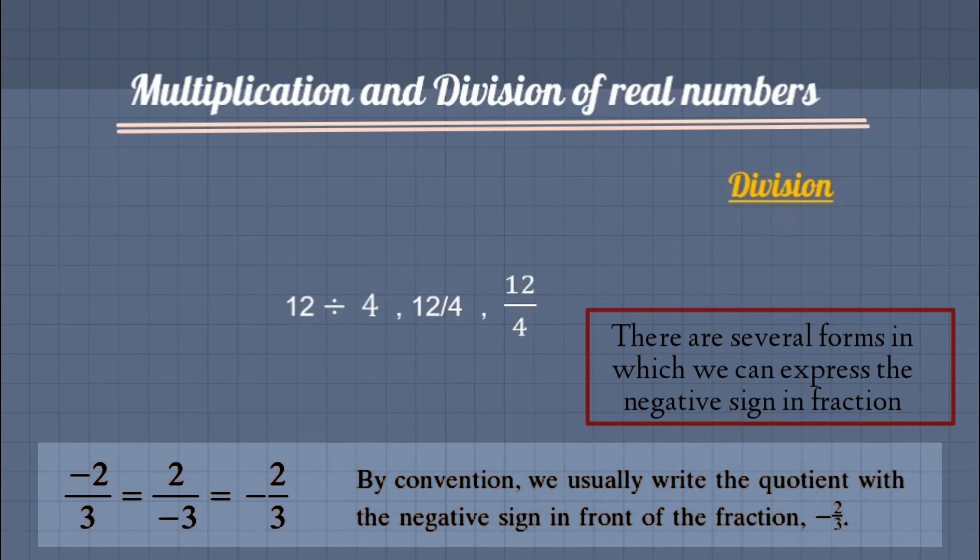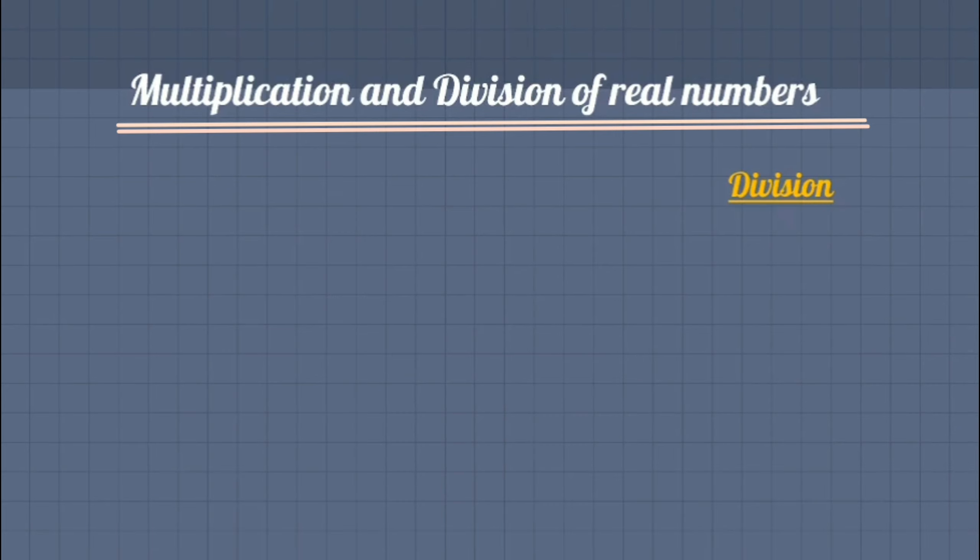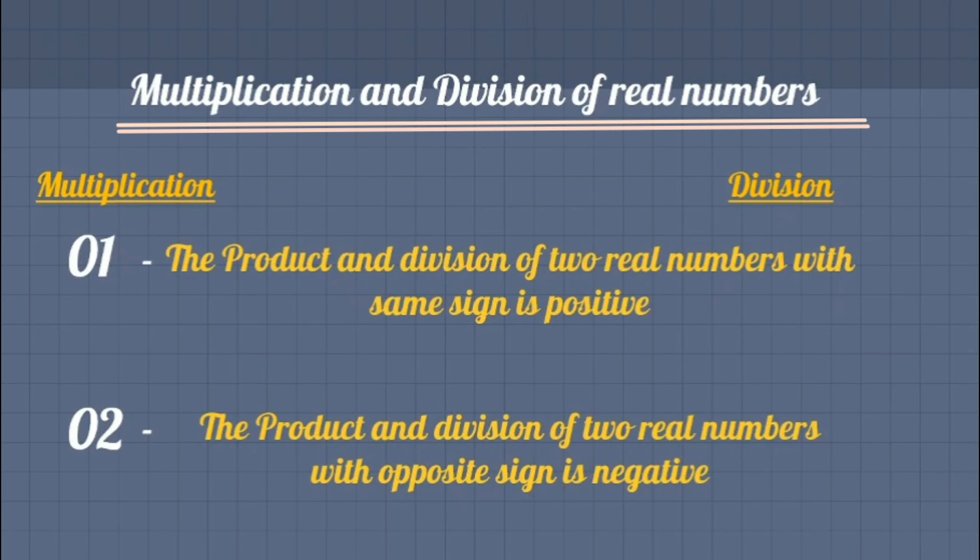To simplify division and multiplication, we actually follow the following two key steps. The product and quotient of two real numbers with same sign is always positive.